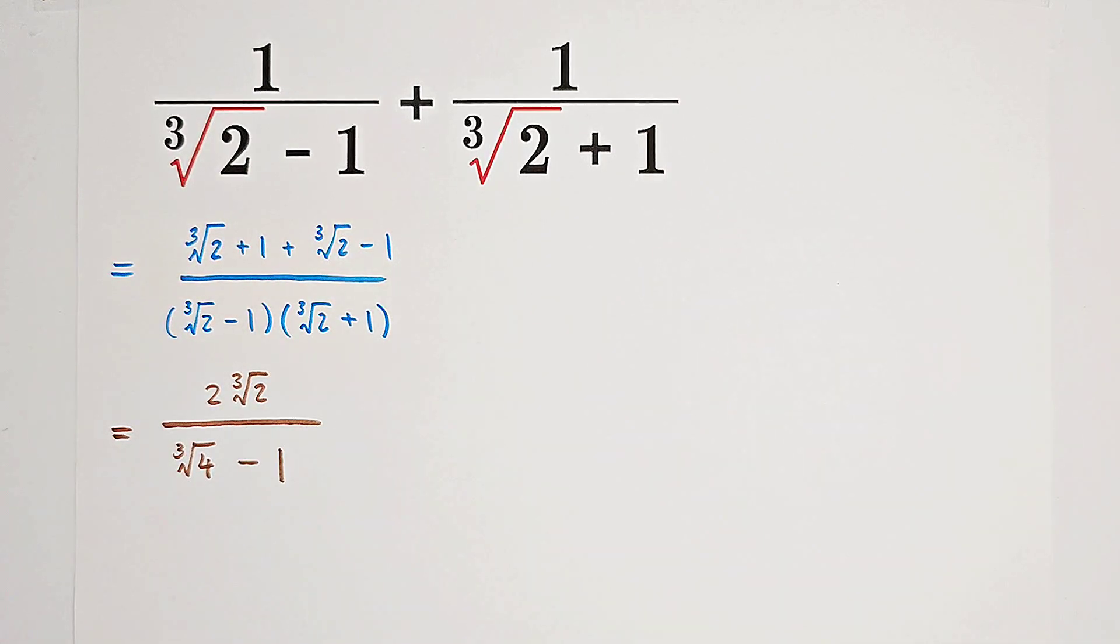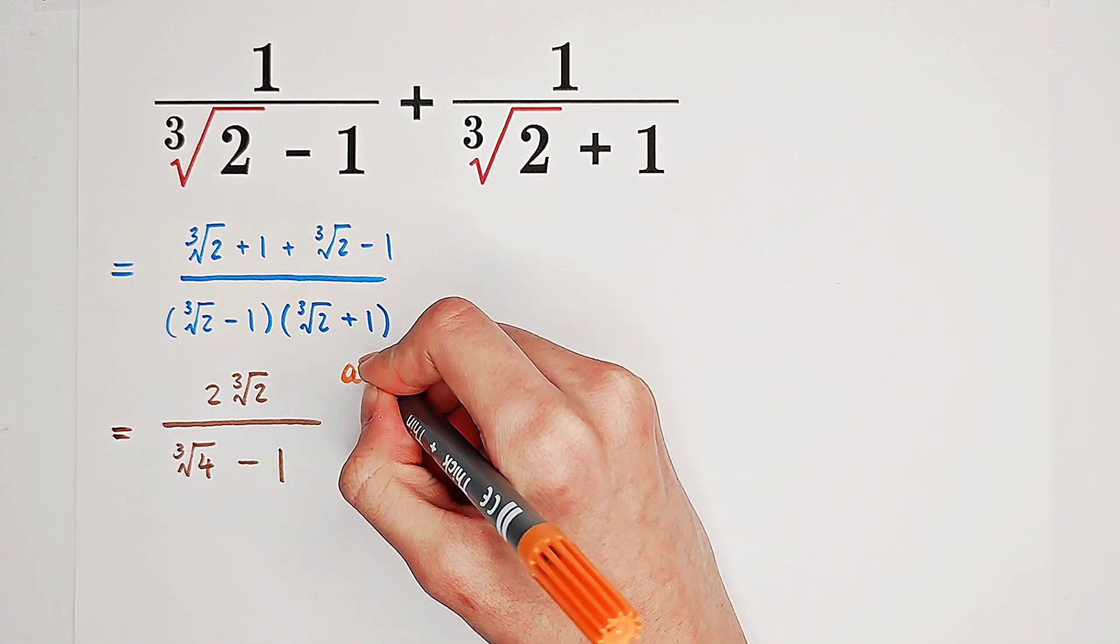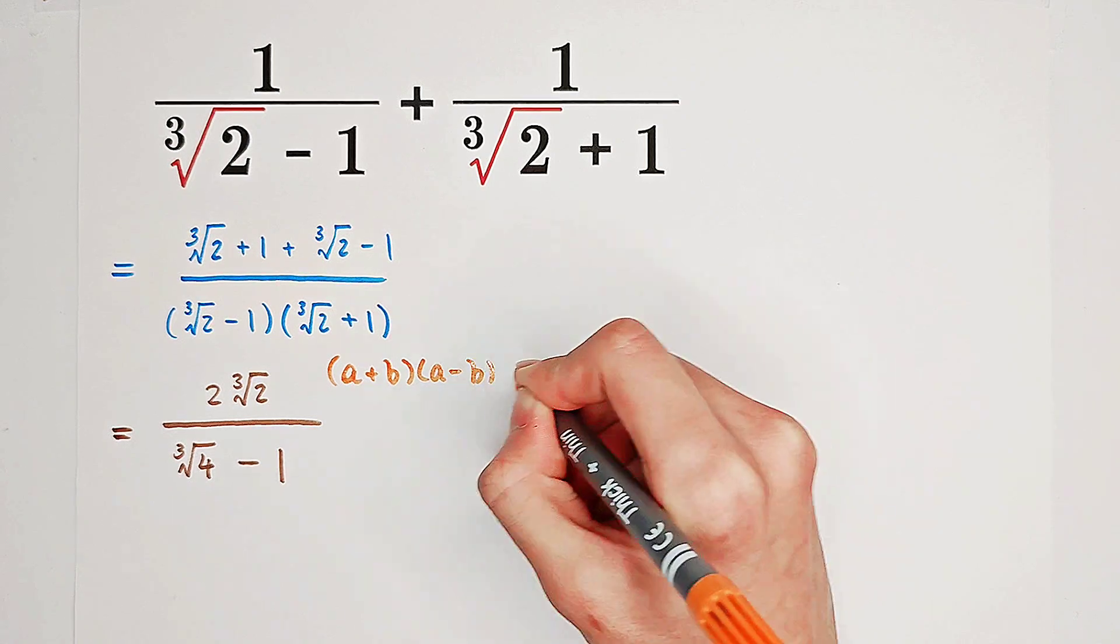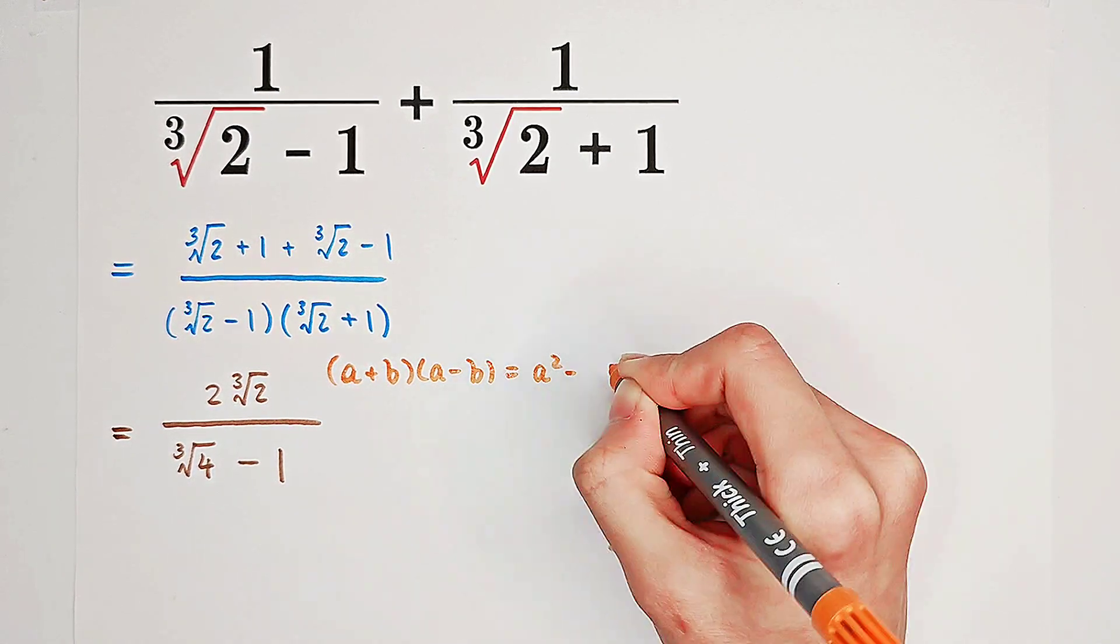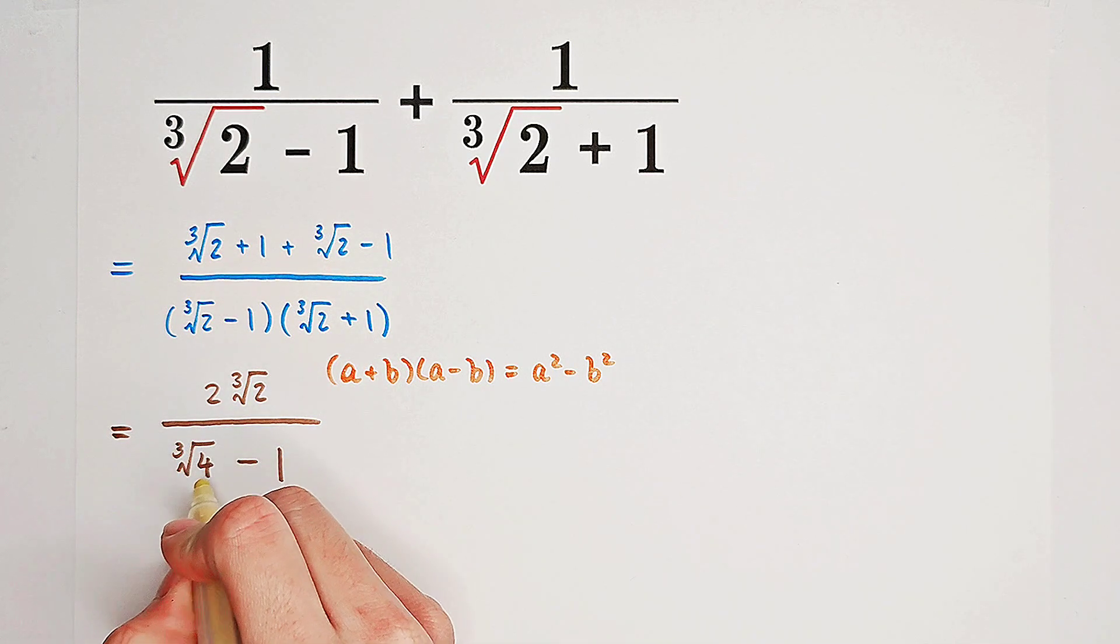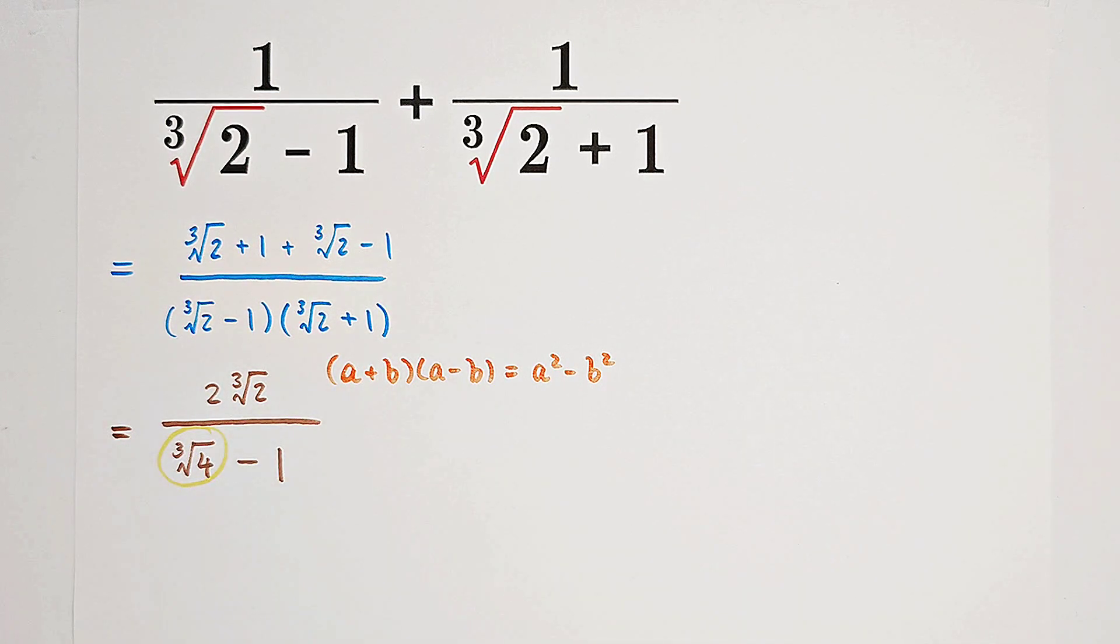Or, what you can do is, using the formula a plus b times a minus b equals a squared minus b squared. So that is also one of the motivations why we should add these two fractions together, since their denominators are actually kind of conjugated to each other. So now, one of our problems is that we have a cube root on the denominator, again. So what can we do?